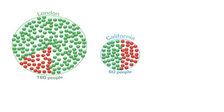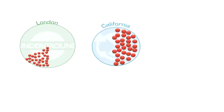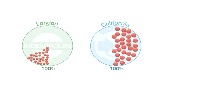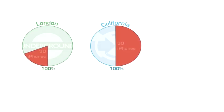That's where percentages come in — they can be very helpful. What percentages do is allow us to imagine that both groups are actually the same size, essentially imagining that there's the same number of people on each train. And now you can see that in London, there's a smaller proportion of people using an iPhone compared to the total than there is in California. That's what percentages are all about — they help us to find a measure for proportion so we can figure it out exactly.